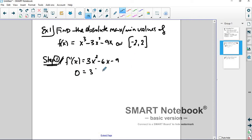Set it equal to 0, factor out that common 3, and you're left with x² - 2x - 3. And if I did my job correctly here, it factors into (x - 3) and (x + 1). So we have two critical numbers, 3 and -1.